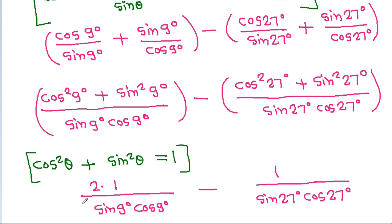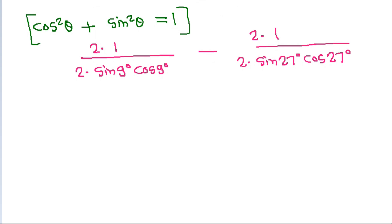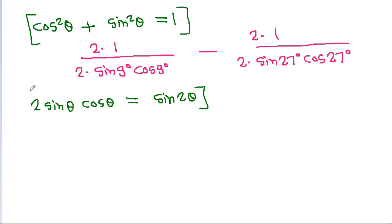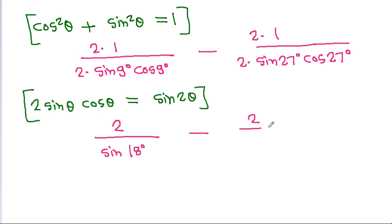Multiplying and dividing by 2, and using 2 sin θ cos θ equals sin 2θ, this becomes 2 by sin 18° minus 2 by sin 54° (since 2 times 27° equals 54°).